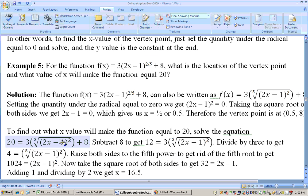Okay, now to find out what x value will make this function equal to 20, well, that means put 20 on the other side. So we'd have to subtract eight from both sides. That'll give you 12 equals this. Now let's divide through by three on both sides, and that'll give you four equals the fifth root of this quantity 2x minus one squared. Now to get rid of the fifth root, raise both sides to the fifth power. That gets rid of the fifth root.